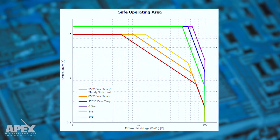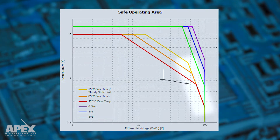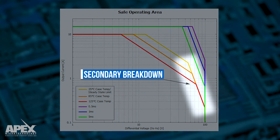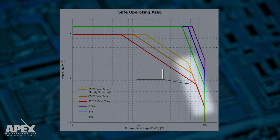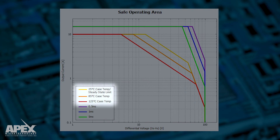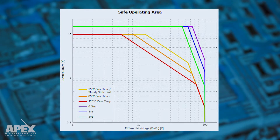The third limitation on the SOA graph indicates a secondary breakdown area. This phenomenon is related to bipolar devices only. Also, the SOA graphs are plotted for different case temperatures as well.